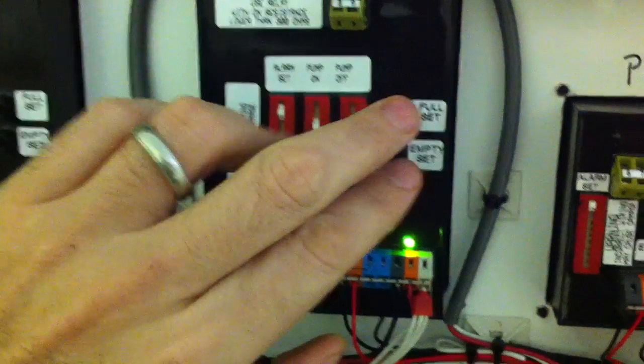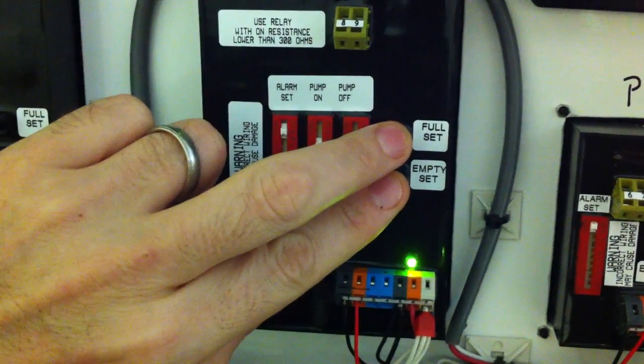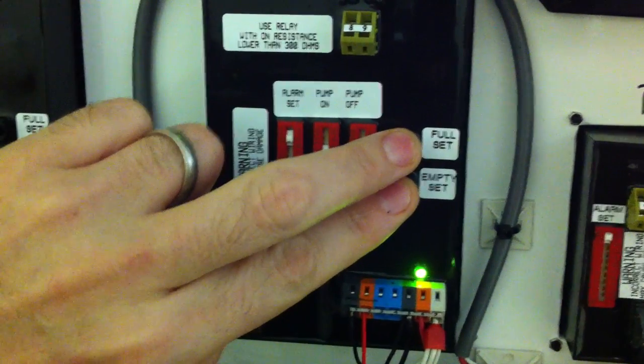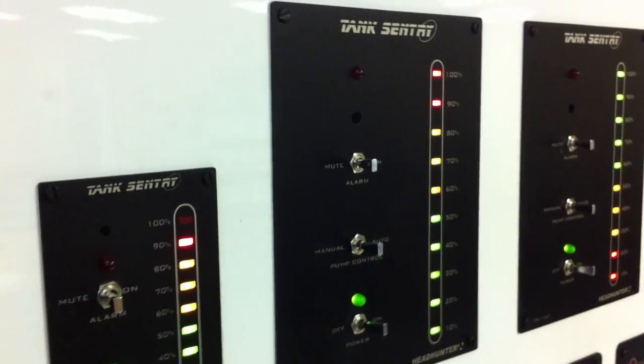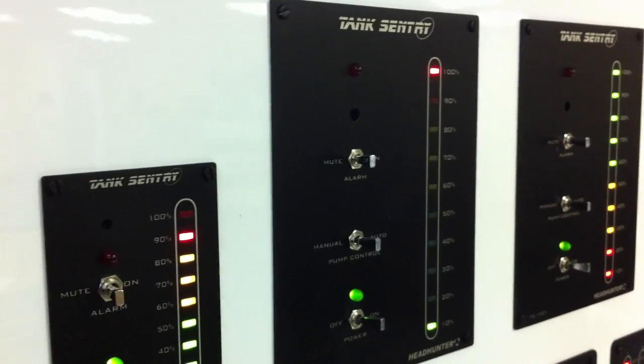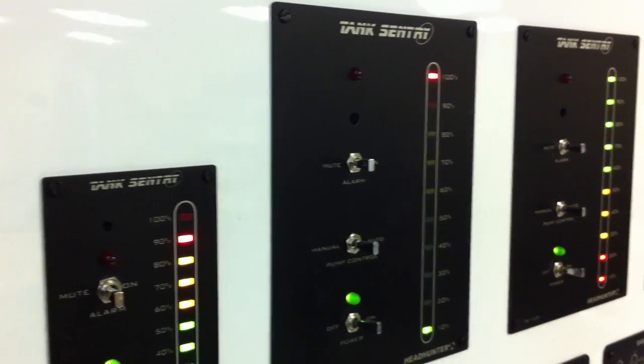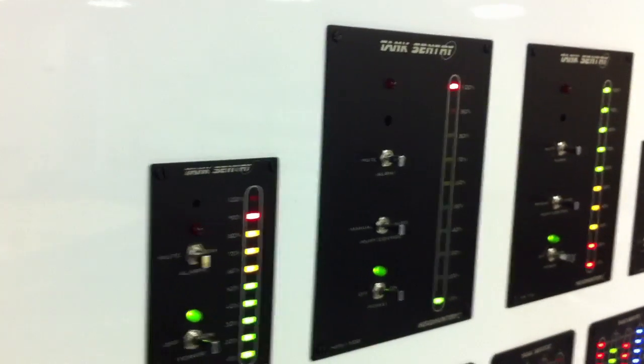To begin calibration, simply hold the full set and empty set buttons down until you get flashing LEDs on the front of the panel. Once released, the 100% and 10% LEDs are illuminated on the front of the panel. The full and empty calibration can begin.